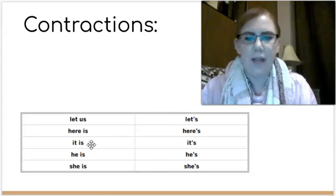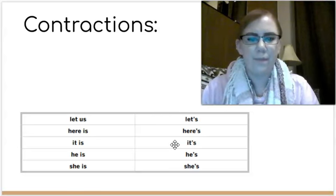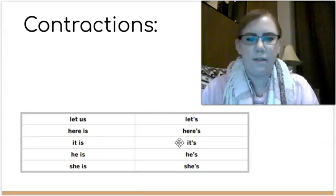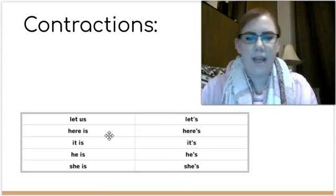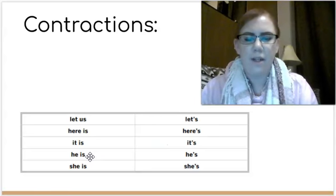The next example is it is, or it's. Which letter did we replace with the apostrophe in the word it's? I don't see the i from is. We replaced the i from is with an apostrophe. Say the word it's. Now say the word it is.